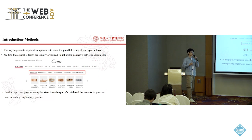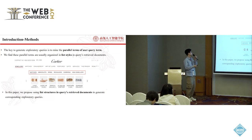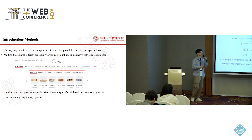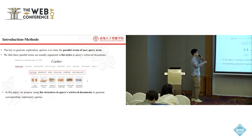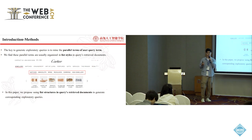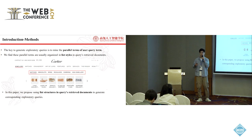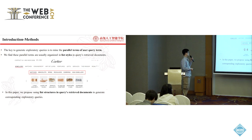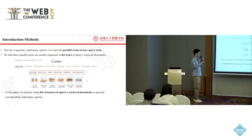The key to generate exploratory queries is to mine the parallel terms of the user query term. We find these parallel terms are usually organized in list styles in query-retrieved documents, because list styles naturally show parallel information. For example, in the retrieved documents of the user query 'Cartier Women Watches,' the term 'watches' is often listed with other accessories such as 'bracelets' and 'rings' using HTML list tags. So in this paper, we propose using list structures in query-retrieved documents to generate corresponding exploratory queries.